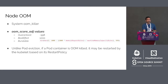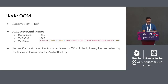If the node experiences a system out-of-memory event prior to Kubelet being able to reclaim memory, the node depends on the system OOM killer to respond. Kubelet sets an OOM score adjustment value for each container based on the quality of service of the pod defined during deployment. The intended behavior is that containers with the lowest quality of service consuming the largest amount of memory relative to scheduling request should be killed first. Unlike pod eviction, if a pod container is killed by OOM, it may be restarted by Kubelet based on the restart policy for the pod.